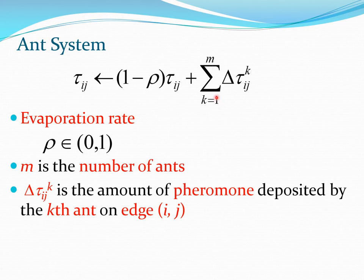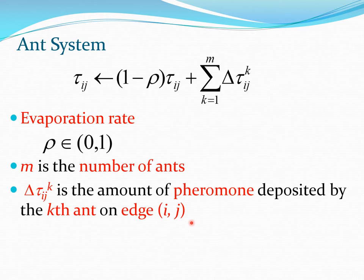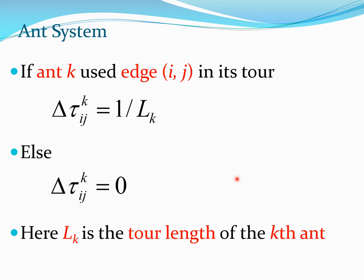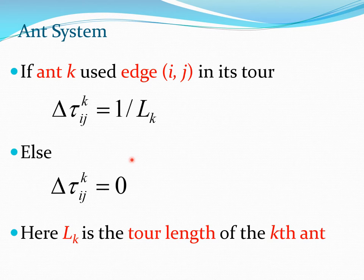The sigma here is on the number of ants. Delta_tau_ij for ant k is the quantity of pheromone deposited by the kth ant on edge ij, where edge ij connects city_i and city_j. If ant k used edge ij in its tour, then delta_tau_ij_k equals 1/L_k, where L_k is the tour length of the kth ant. If it didn't use this edge, then delta_tau is 0.